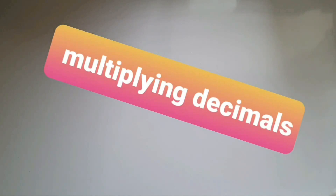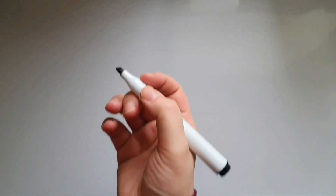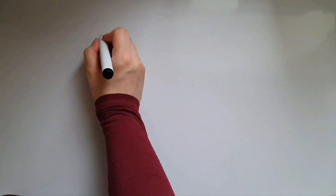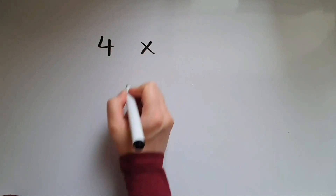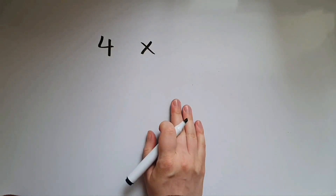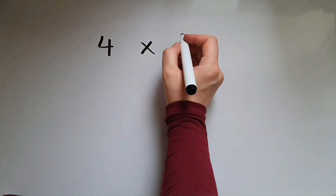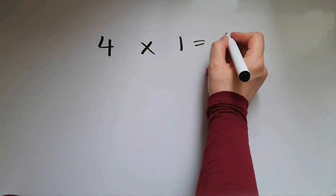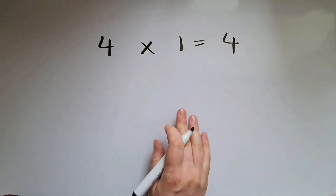In this video we'll learn to multiply decimals. So what do we mean by multiplying by decimals? If I get a number such as 4 and if I multiply it by 1, the answer I'm going to get is 4.